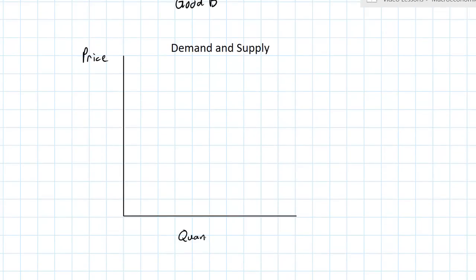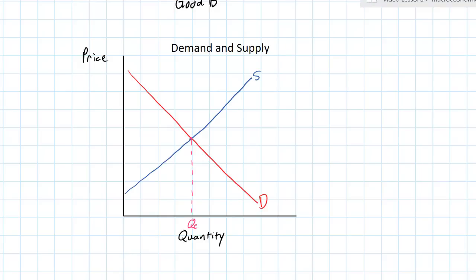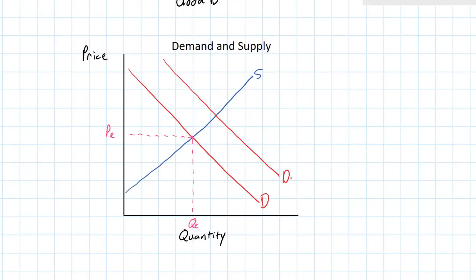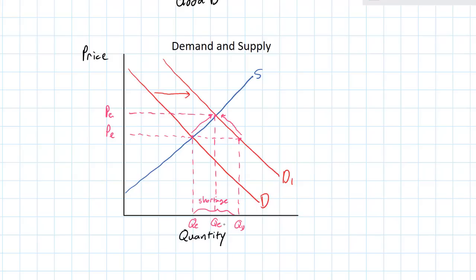Moving on to supply and demand. We've got price on the vertical axis, quantity on the horizontal axis. We've got a downward sloping demand curve representing the inverse relationship between price and quantity, and an upward sloping supply curve representing the direct relationship between price and quantity. Equilibrium is at the intersection of supply and demand, PE and QE. If there's a shift in demand outwards representing an increase in demand, there's a temporary shortage at the old equilibrium price. The equilibrium will be restored when price increases to a new equilibrium. Be sure you're familiar with the determinants of demand and supply before moving on.